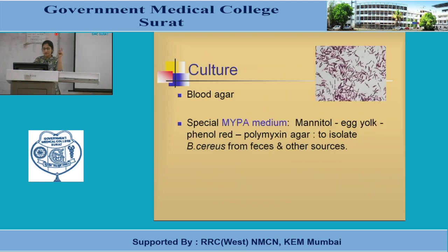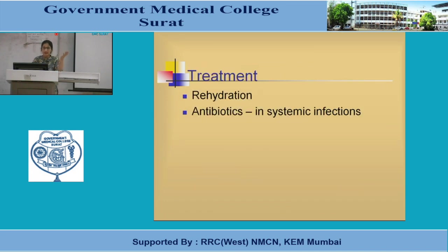For diagnosis of Bacillus cereus food poisoning, samples include stool, vomitus, remaining food, and blood. Microscopy is not so important. Culture on MYPA agar (M for mannitol, Y for egg yolk, P for phenol red, A for polymyxin agar) is used to isolate Bacillus cereus from fecal specimens. On blood agar they produce colonies but not a pearl-like colony. Toxin testing differentiates it from staphylococcal food poisoning. Treatment is mainly rehydration therapy since it is self-limiting; antibiotics are used only for systemic complications.